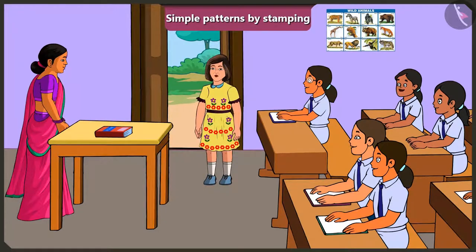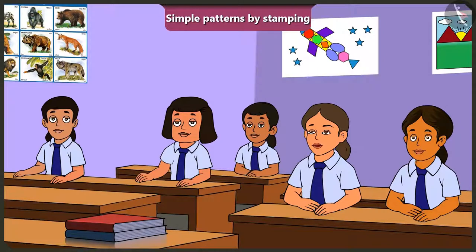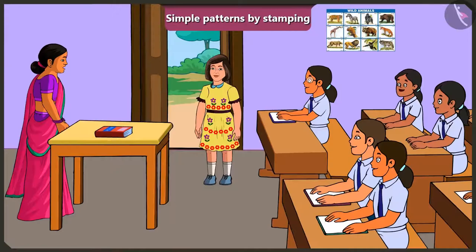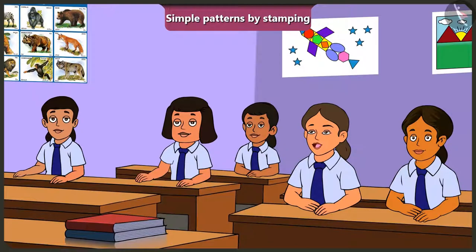Happy birthday to you, dear Jimmy. Thank you, ma'am. Jimmy, the pattern on your frock is really beautiful. Ma'am, how is a pattern made on this frock? A block with a flower-shaped design has been used as a stamp on the frock to make a beautiful pattern like this.